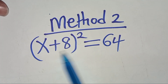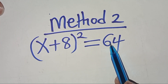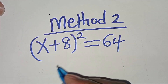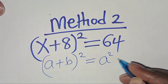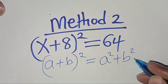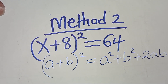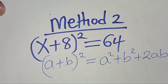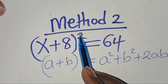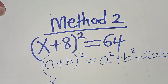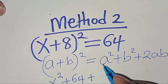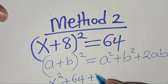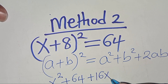Now applying Method 2, we have x plus 8 raised to the power 2, equal to 64. This is in the form of a plus b raised to the power 2, which can be expressed as a squared plus b squared plus 2ab. Applying this algebraic identity, x plus 8 to the power 2 expands to x squared, plus 8 squared which is 64, plus 2 times 8 times x, which is 16x.